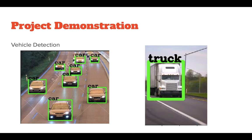Now let us start with the project demonstration. This is the output of our detection model using YOLO object detection. As we can see, vehicles like cars and trucks are detected with good accuracy. This gives us a count of the vehicles of each class, which is fed into the algorithm to set the green time of the signal.